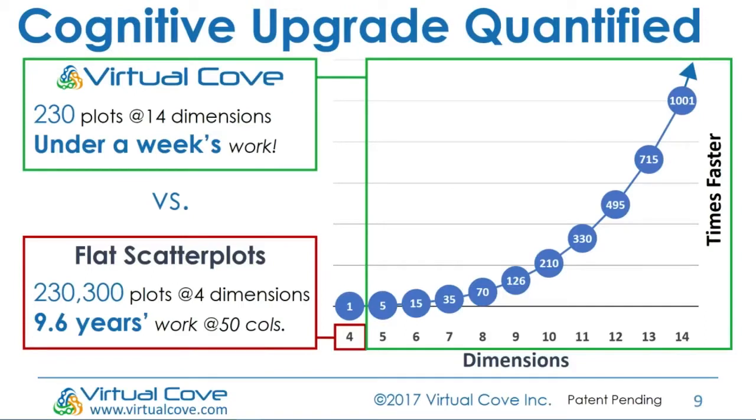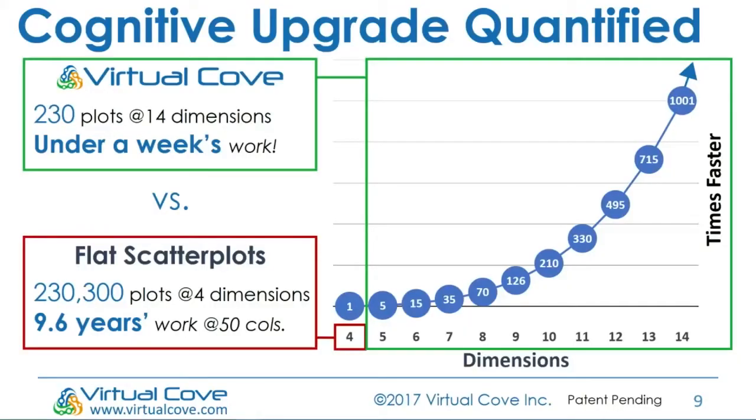One of our advisers is a MacArthur fellow MIT professor and he helped us build this model. What it basically means is as you add more dimensions, you are geometrically improving your understanding of the data. So where it has the four with the red box around it, if you can see it, that's sort of like one speed you're looking at a scatterplot.